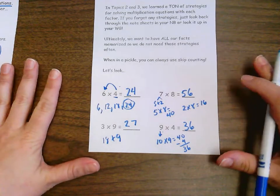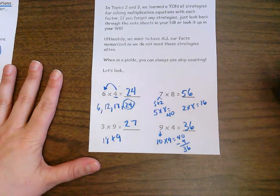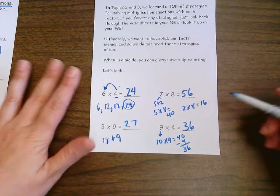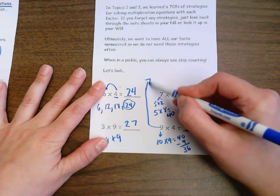So these are all strategies we should be comfortable with. And again, a great fallback plan would be skip counting. Let's try this one with some skip counting.